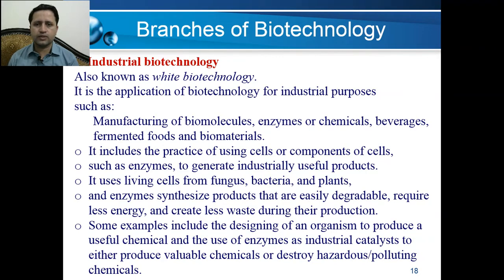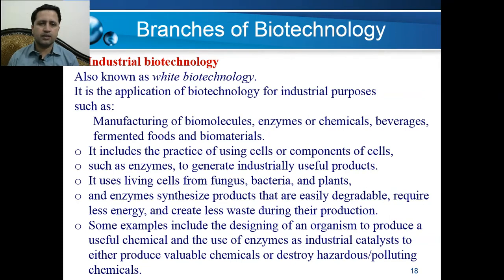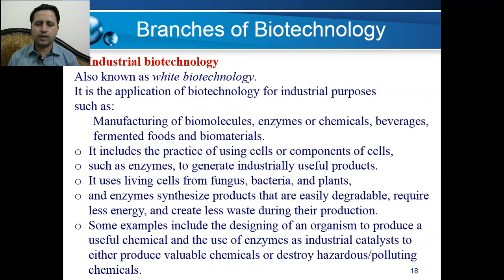Examples of industrial biotechnology include yogurt production, cheese production, citric acid production, and ethanol production at industrial scales. Other examples include designing organisms to produce useful chemicals and using enzymes as industrial catalysts to either produce valuable chemicals or destroy hazardous polluting chemicals.